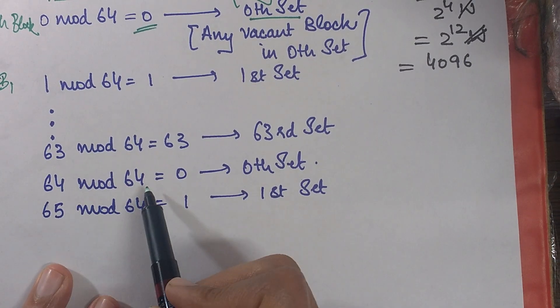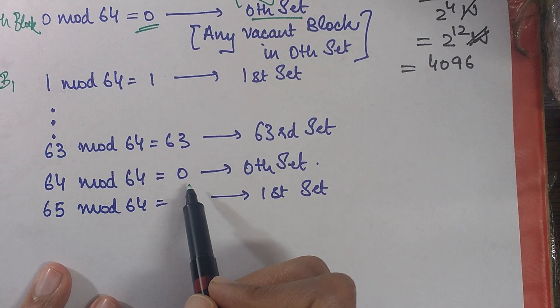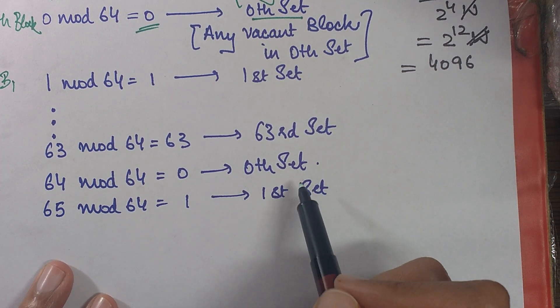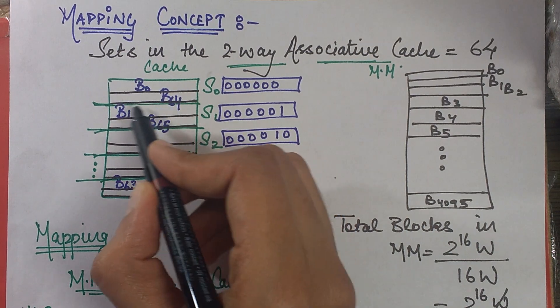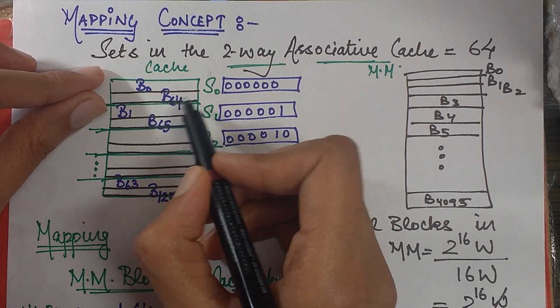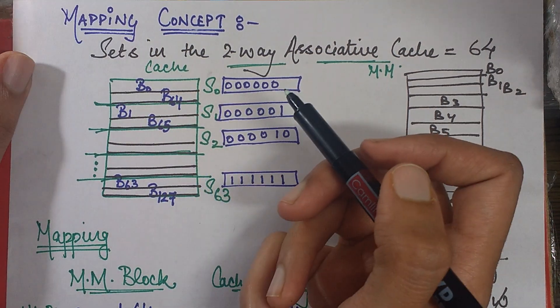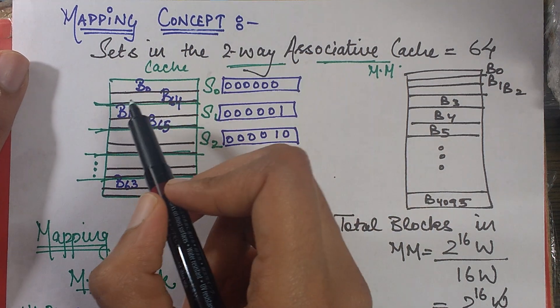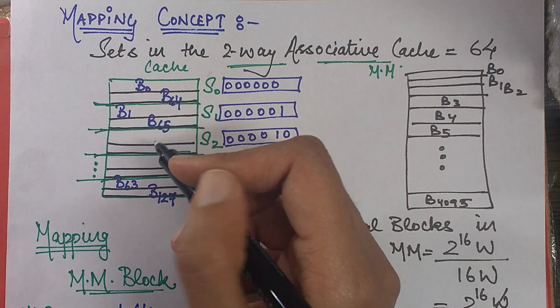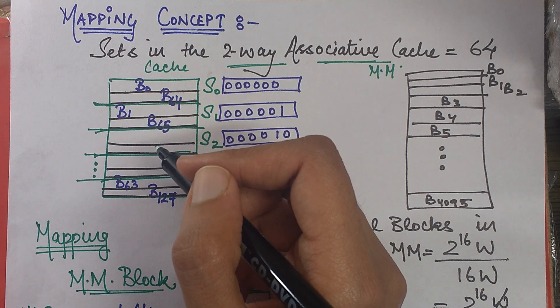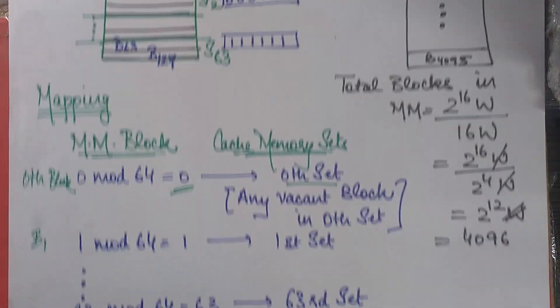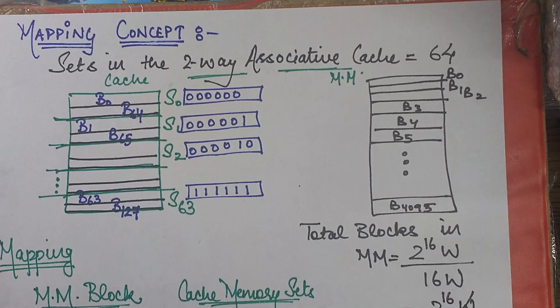And then you move on to 64 mod 64, which gives you 0 again. So will it be a tie? No, it is not a tie. It's 0th set, but you have one vacant place over there, this the second block. So I've written B64 over here. So now both the cells of this set are filled. And now if another block will come, then there'll be a tie. Then you have to replace one of the blocks in that case. So this was the thing for your mapping concept.